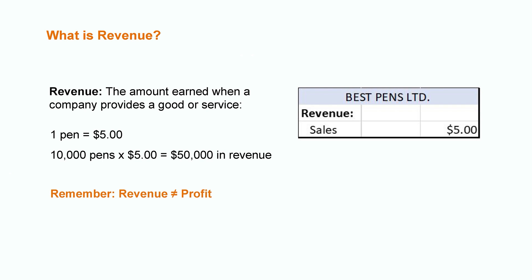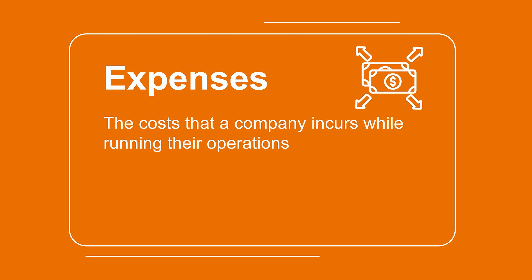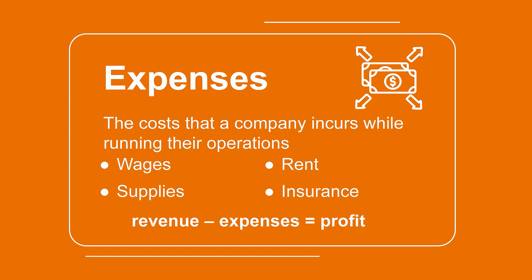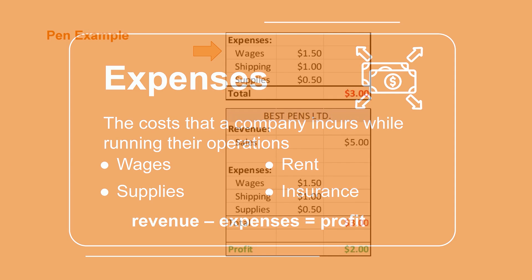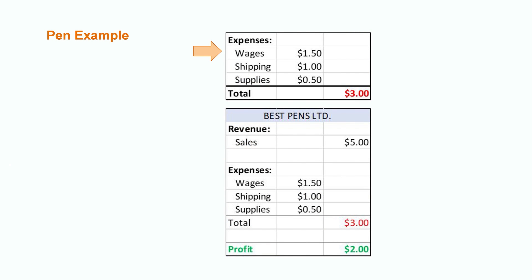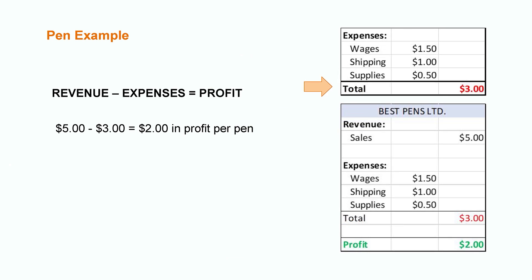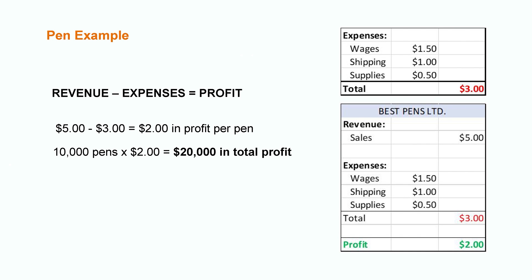However, let's remember that revenue is not profit. First, we must consider the company's expenses. Expenses are the costs that a company incurs while running their operations — things like wages, supplies, rent, and insurance. These expenses are deducted from the revenue to ultimately arrive at profit. Going back to the pen example, every time we sell a pen, it costs $1.50 in employee wages, $1 for shipping, and $0.50 in supplies. Once we deduct all these expenses from our original $5 in revenue, that only leaves us with $2 of profit. From the 10,000 pens the company sold that quarter, this would work out to $20,000 of total profit.